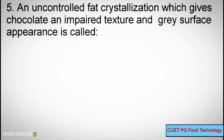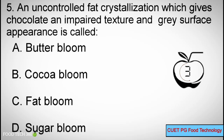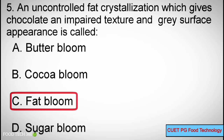Q5: An uncontrolled fat crystallization which gives chocolate an impaired texture and grey surface appearance is called? A. Butter bloom, B. Cocoa bloom, C. Fat bloom, D. Sugar bloom. Correct answer: C. Fat bloom.